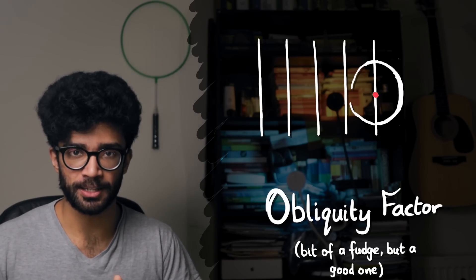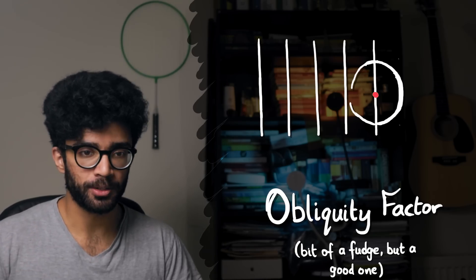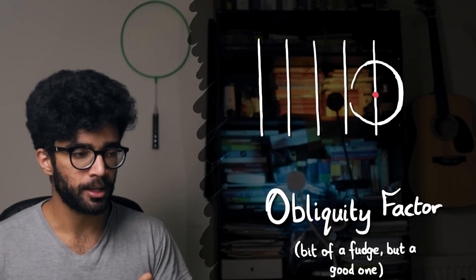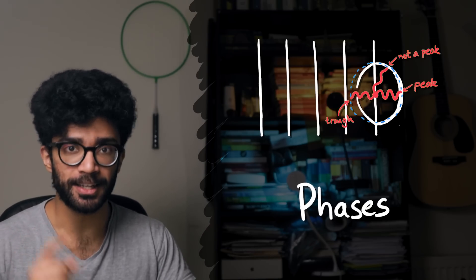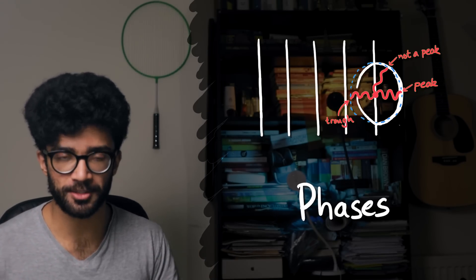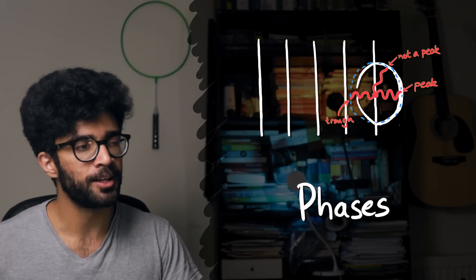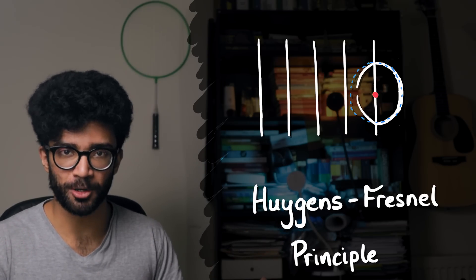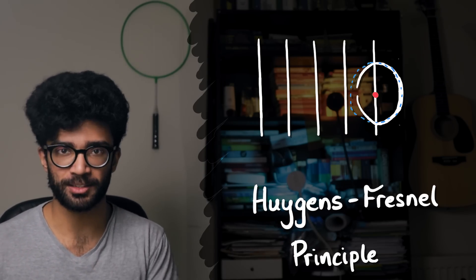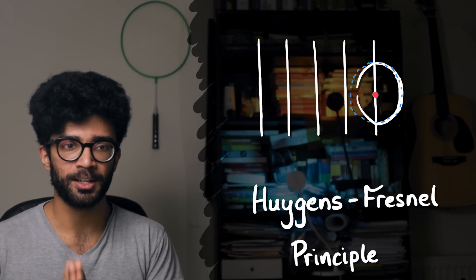Fresnel also had to make one other slight tweak to make sure the waves predicted by this mathematical model behaved exactly like waves do in real life. He had to slightly tweak the phases of the secondary waves coming from every single point along our wavefront. Huygens originally said the secondary waves have to look like this, whereas Fresnel said they could look slightly different. So Fresnel took Huygens' model and modified it in two ways: he added the obliquity factor and he changed the phases of the waves in different directions. This modified model — technically a new model — became known as the Huygens-Fresnel principle, which is a much better predictor of how waves behave in real life. The aim of this video was to discuss Huygens' Wavelets and the Huygens-Fresnel principle to help you visualize how waves propagate and why they bend when passing through slits.